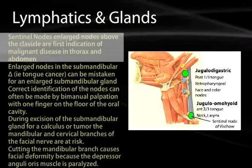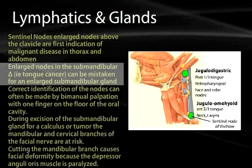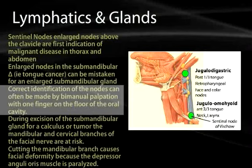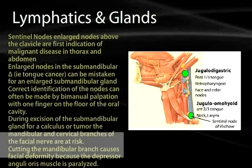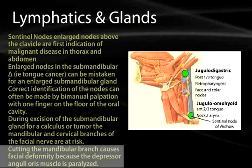The neck and larynx also drain through these nodes, so infections there may appear as a dilated cervical node. Sentinel nodes are enlarged nodes above the clavicle that are first indications of malignant disease in the thorax and abdomen. Enlarged nodes in the submandibular triangle — such as with tongue cancer — can be mistaken for an enlarged submandibular gland. Correct identification can often be made by bimanual palpation with one finger along the floor of the oral cavity. During excision of the submandibular gland for a calculus or tumor, the mandibular and cervical branches of the facial nerve are at risk. Cutting the mandibular branch causes facial deformities due to paralysis of the depressor anguli oris muscle.